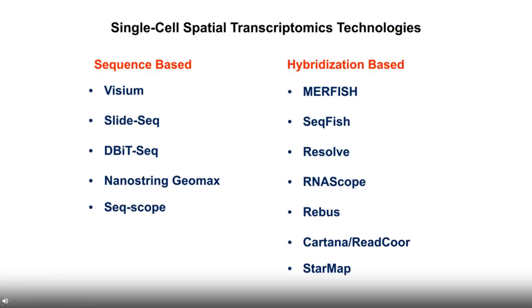There has recently been rapid progression in single-cell spatial transcriptome technologies that can obtain spatial information at single-cell resolution. Simply put, there are two major types: one is the sequencing-based method, and the other is the hybridization-based method. For example, from the Visium technology from 10X is something we are quite familiar with. Today I will mainly focus on the hybridization-based method, particularly MERFISH.